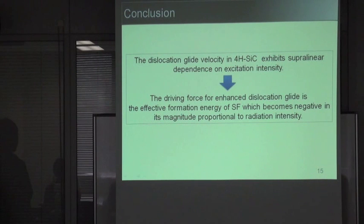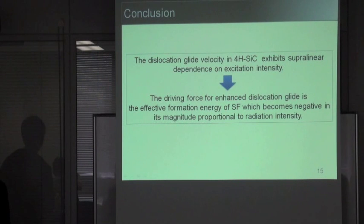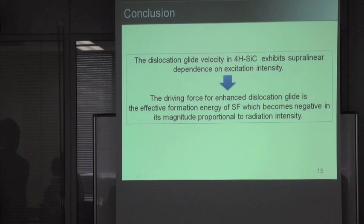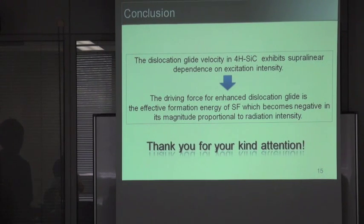I would like to conclude my presentation. In our photoluminescence mapping measurements, the dislocation glide velocity in 4H silicon carbide exhibits a quadratic dependence on excitation intensity. This peculiar result suggests that the driving force for the enhanced dislocation glide is the effective formation energy of the Shockley stacking fault, which becomes negative in magnitude proportional to the radiation intensity. Thank you for your kind attention.